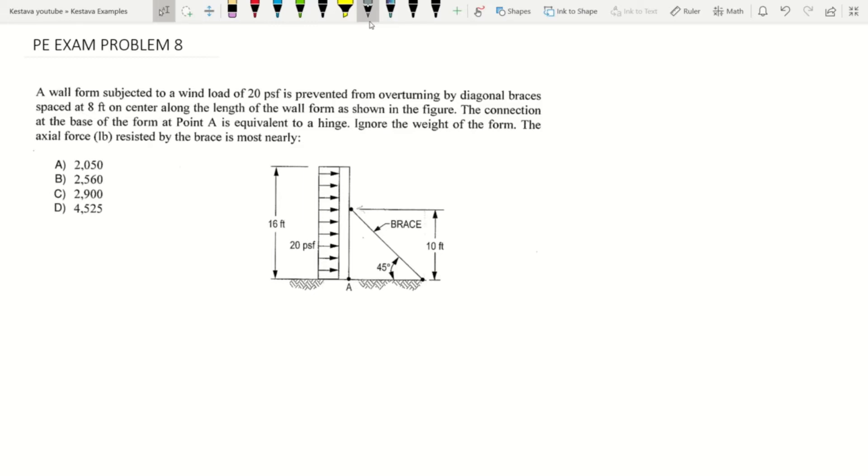A wall form subjected to a wind load of 20 PSF is prevented from overturning by diagonal braces spaced at eight feet on center along the length of the wall form as shown in the figure.